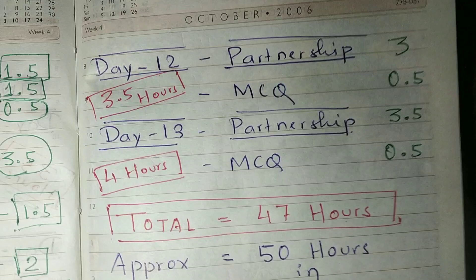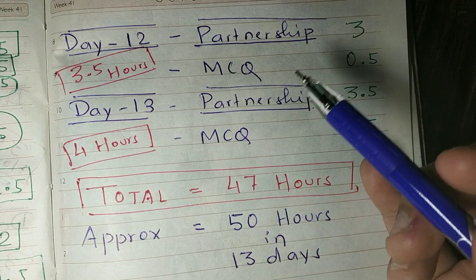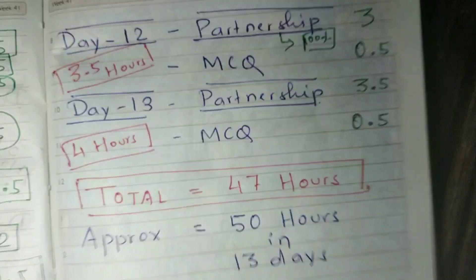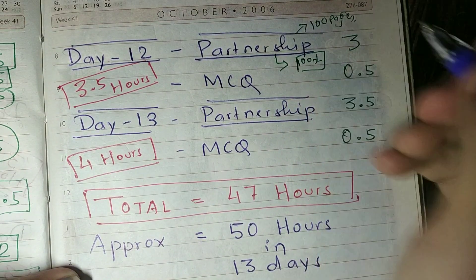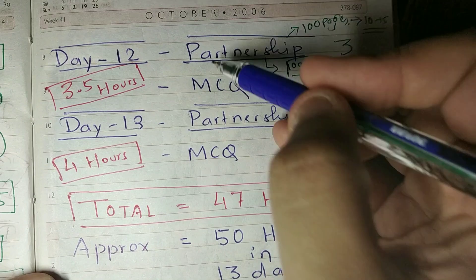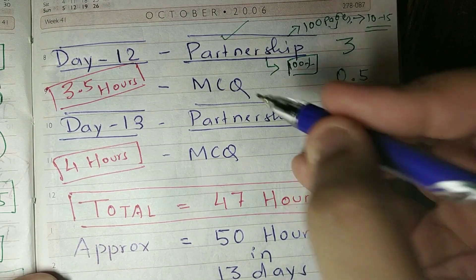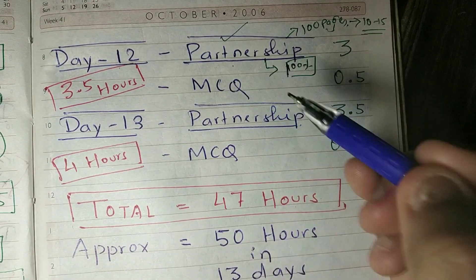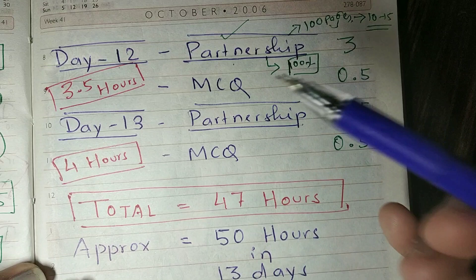On Day 12, I've kept Partnership Accounts, because a question from Partnership comes every single year — 100%. It's a chapter we cannot leave. However, it is a 100-page chapter with many concepts and carries only 10 to 15 marks. So I'm leaving this up to you: if you are comfortable with this chapter, go for it. Otherwise, if you want to skip Partnership and complete all other chapters thoroughly, you can skip it — but the condition is you must complete all other chapters.